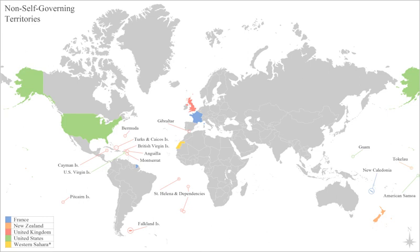The Special Committee on Decolonization maintains the United Nations list of non-self-governing territories, which identifies areas the United Nations believes are colonies. Given that dependent territories have varying degrees of autonomy and political power in the affairs of the controlling state, there is disagreement over the classification of colony.